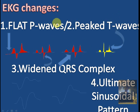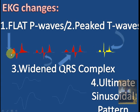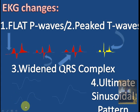EKG changes: first, with moderate hyperkalemia you mainly see flat P-waves and peaked T-waves. Peaked T-waves are a characteristic of hyperkalemia and help you identify it. As you can see in my drawn EKGs, there is a peaked T-wave in all of them, and in one I've tried to show there are no P-waves. As potassium levels rise further, there is widening of the QRS complex — it keeps widening and ultimately, with very high potassium, you get these sinusoidal EKG patterns.